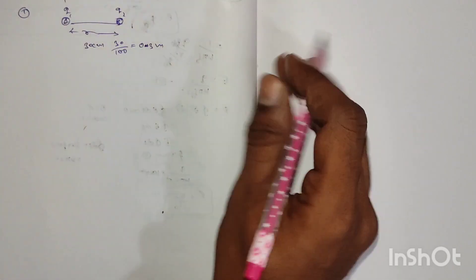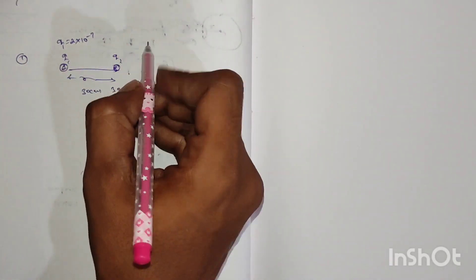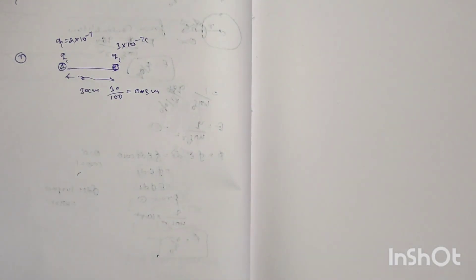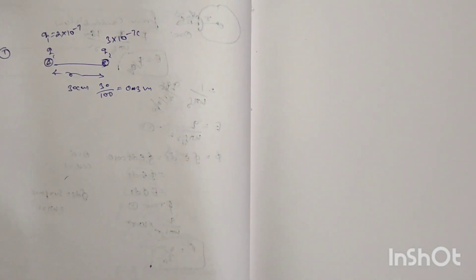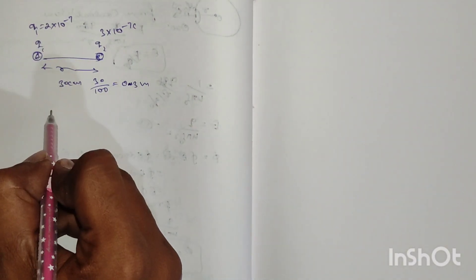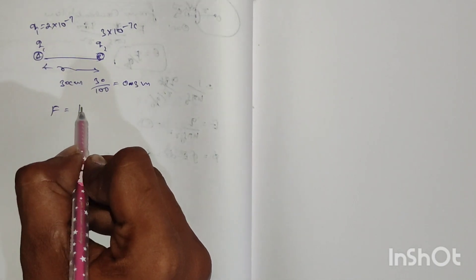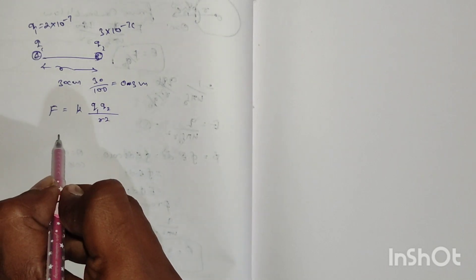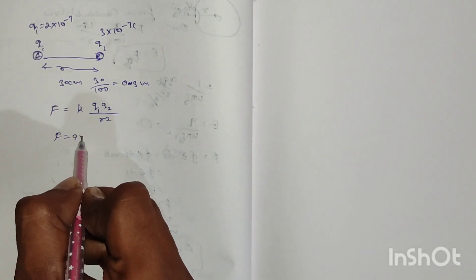Here q1 is 2×10^-7 Coulomb and q2 is 3×10^-7 Coulomb. Next, we apply the formula: Force equals k times q1 times q2 divided by r squared.